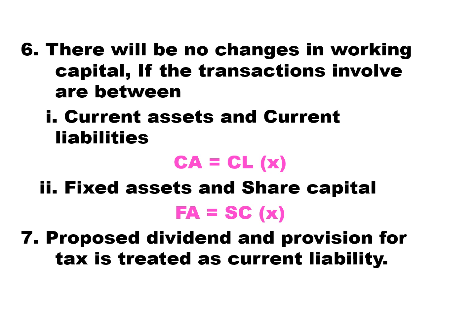Sixth point: there will be no change in working capital if the transactions are between current assets and current liabilities, or between fixed assets and share capital. There is no change if transactions are between current and current, or non-current and non-current. Current assets and current liabilities are both current items. Fixed assets and share capital are both non-current items. Only current versus non-current results in a change in working capital.